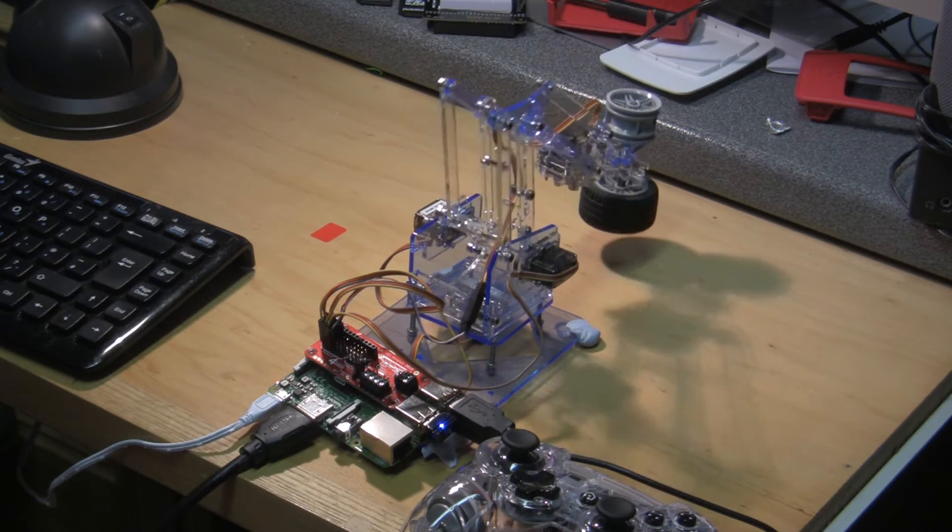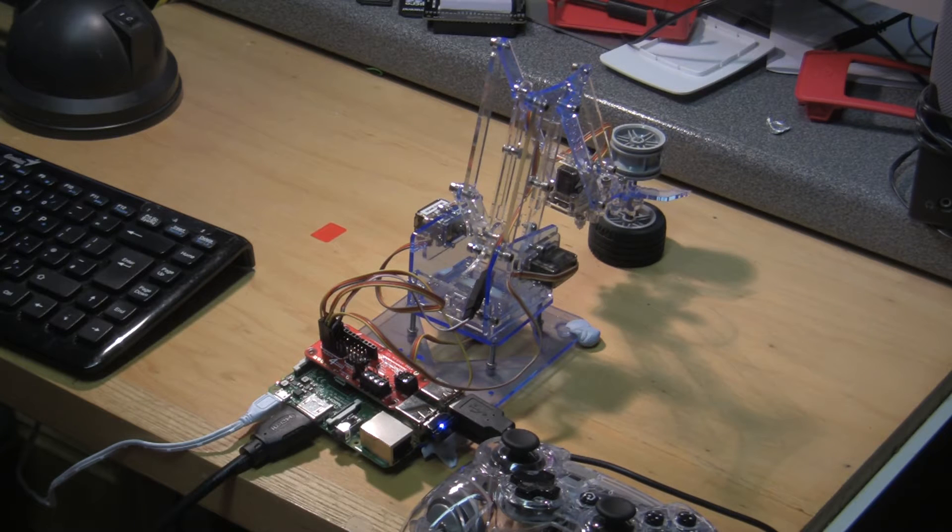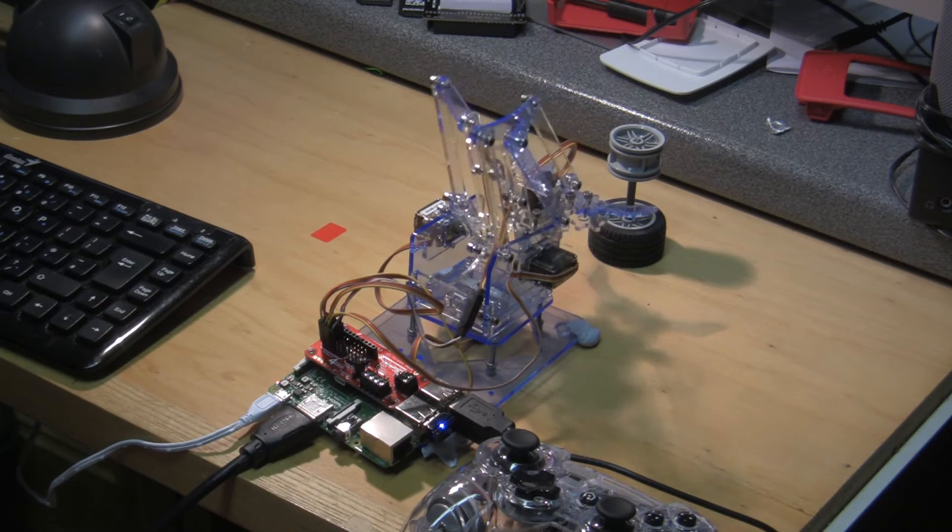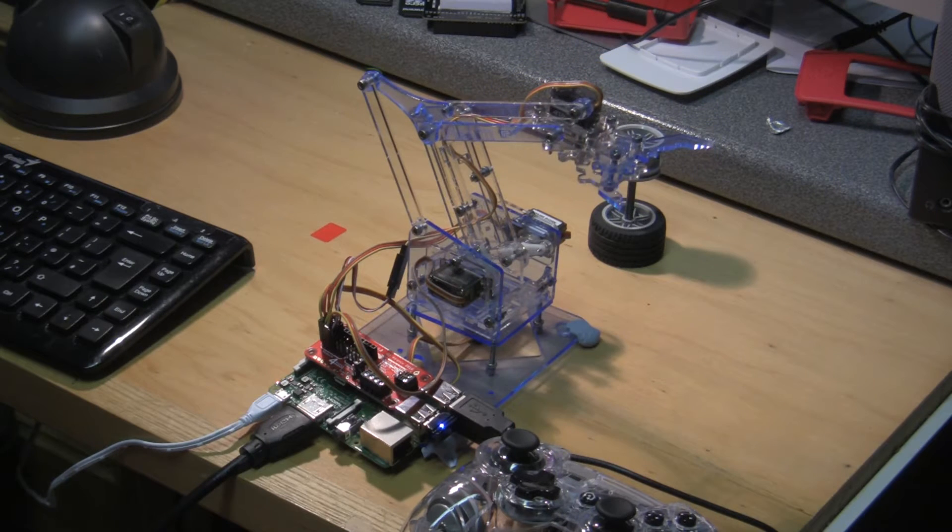It goes and picks up this object, swings it round and puts it in front of the arm here, lowers it again, opens the grip, retracts the arm, raises it, swings it round to the right, then swings it back again to pick it up and put it back where it came from.